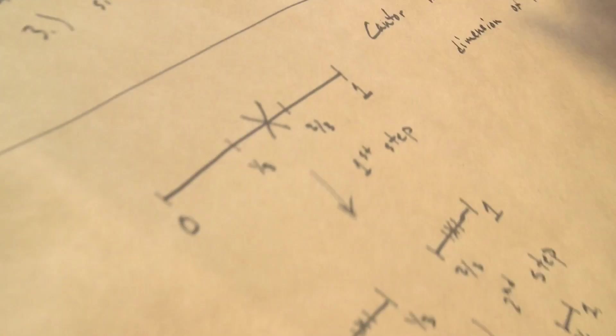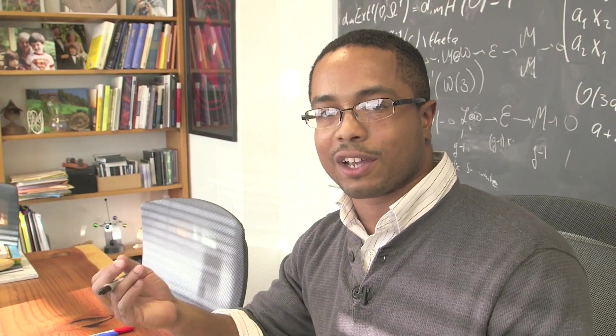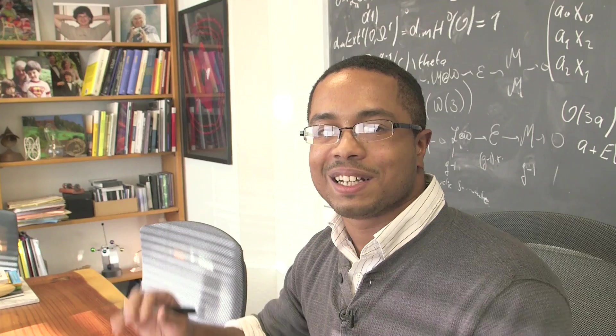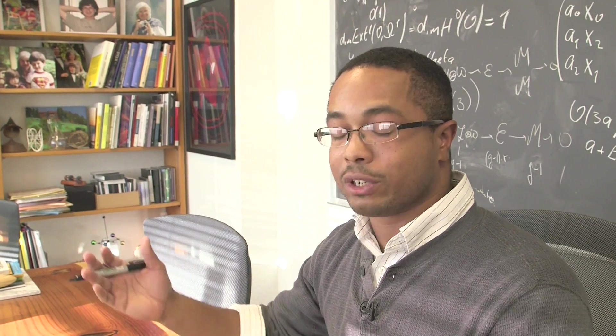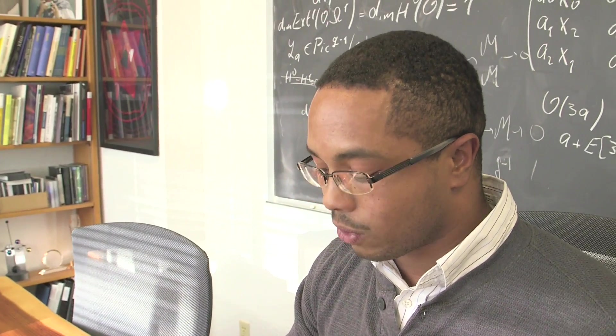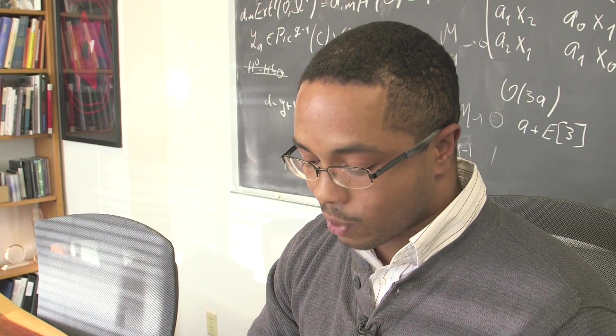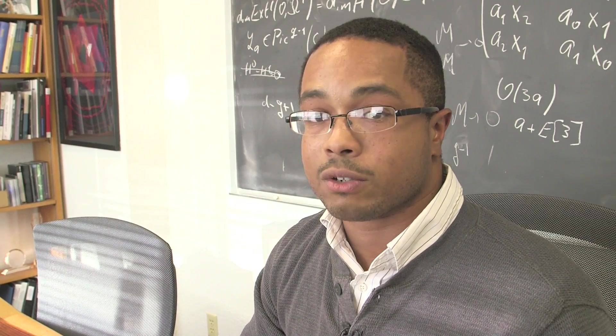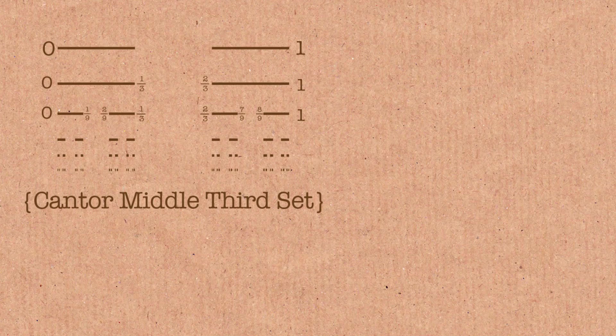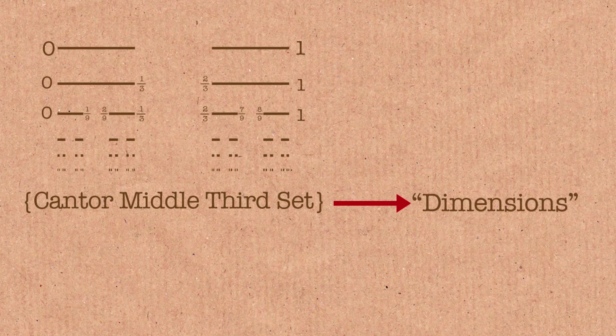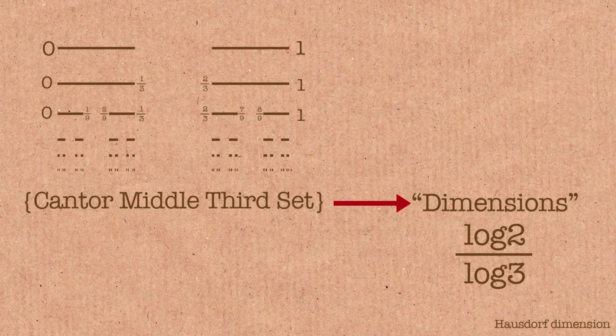So the dimension of the line should just be one, or the interval should just be one. And there's some ways to measure the dimension of this Cantor one third set. And I'll just say it here, and I'll call it dimension in quotations. And I'll say that the dimension of Cantor set is log two over log three.